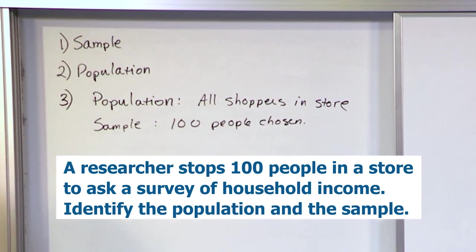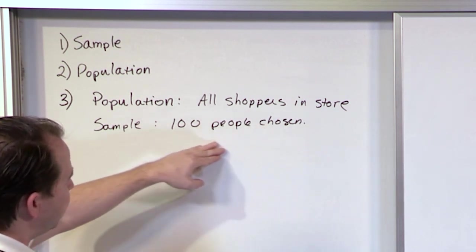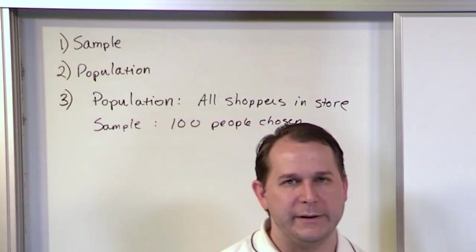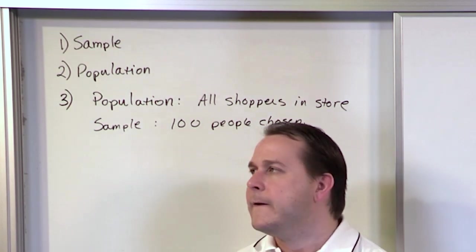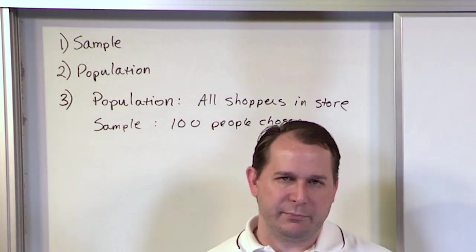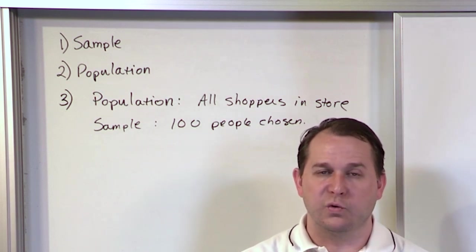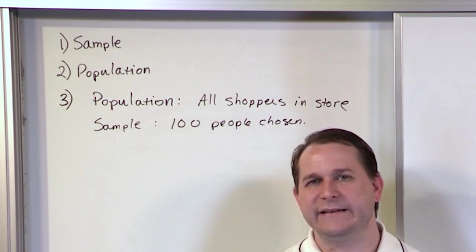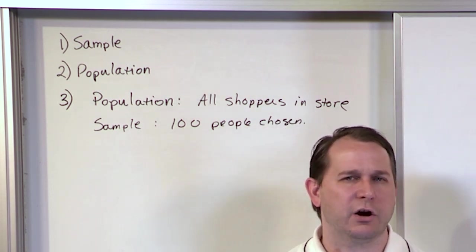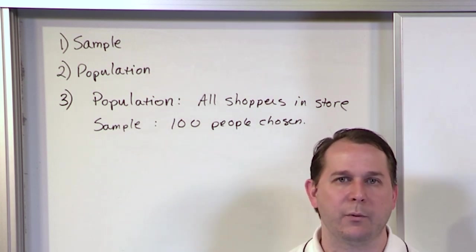There's a little bit of wiggle room in how you do this. The sample is rock solid. Nobody could argue anything different than this because the 100 people that you pick is definitely the sample. But you could make an argument that the population might be a larger group of people. Like maybe the population is everybody in a city or something like that and you're only focusing on one store.